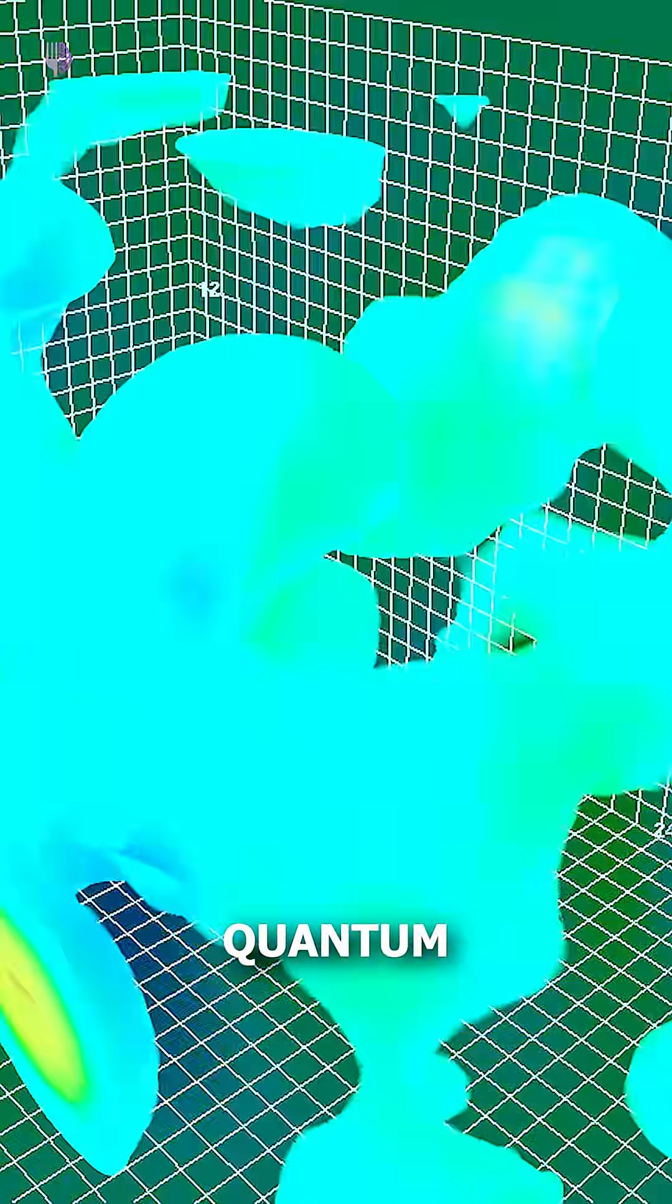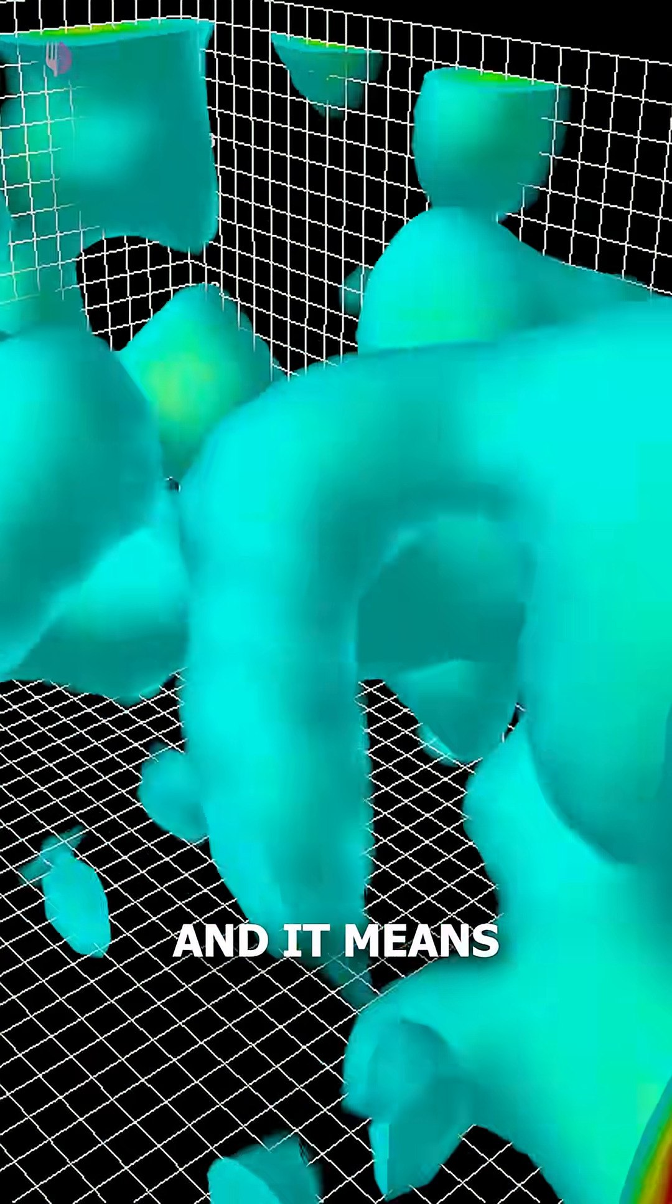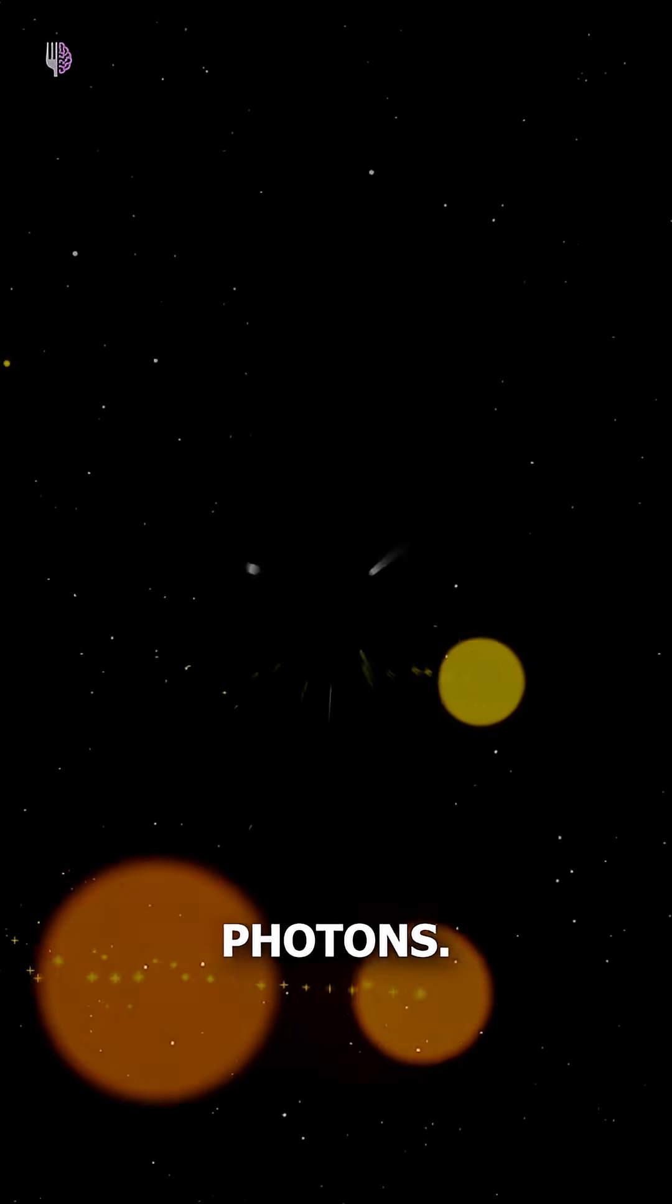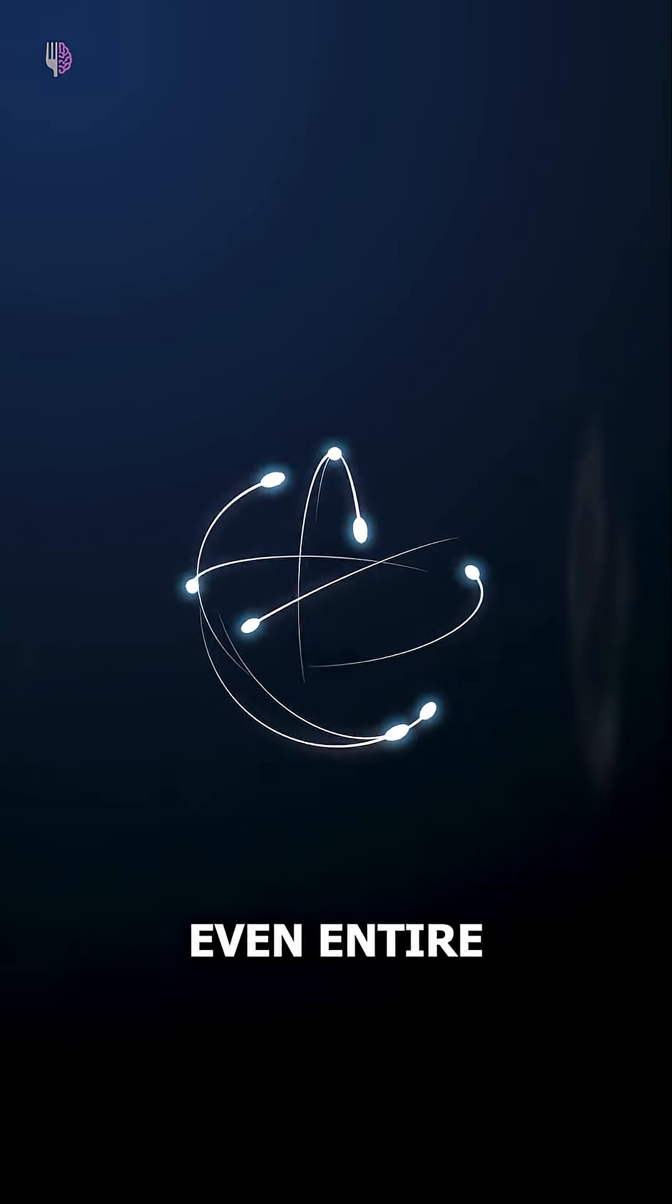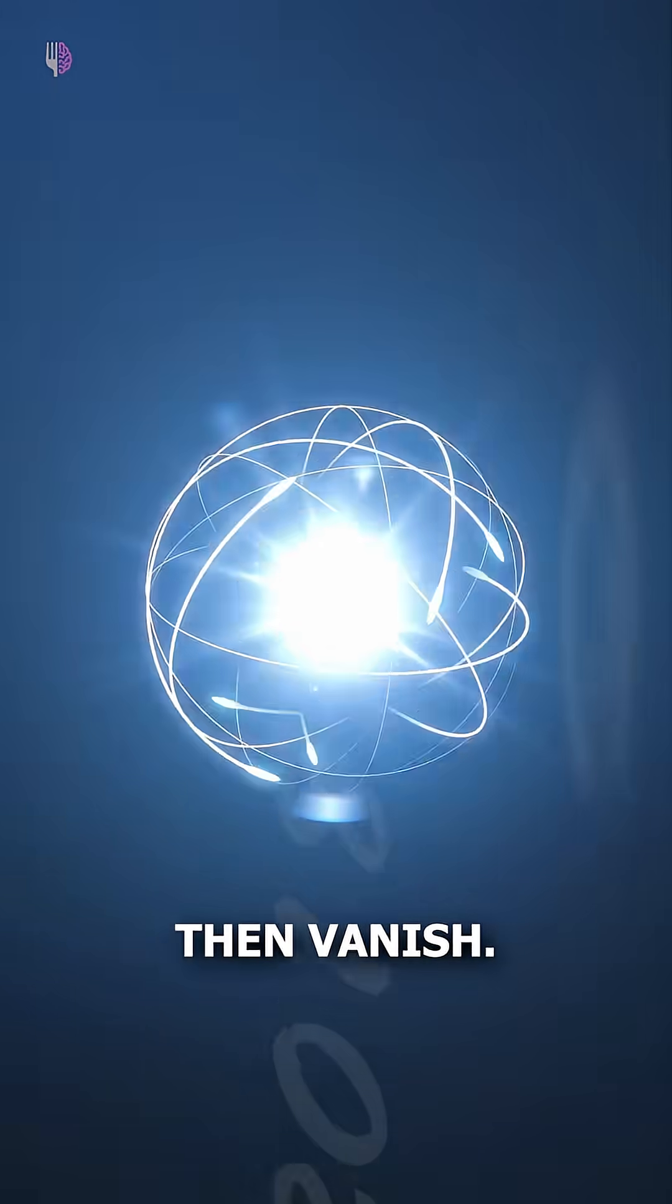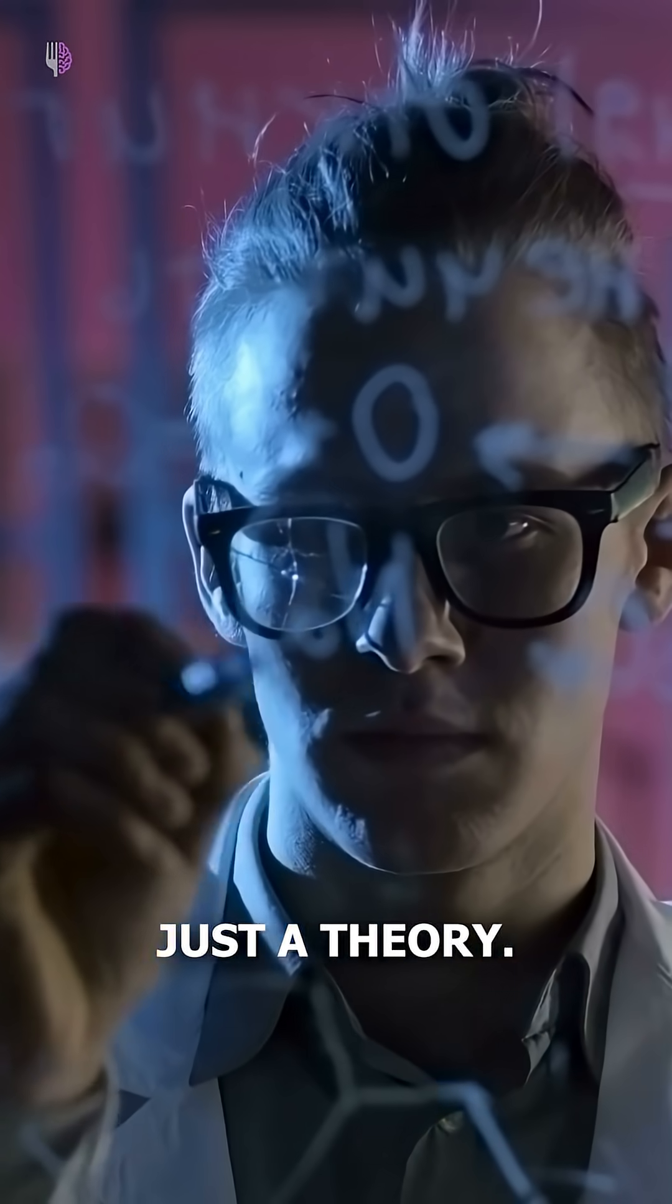This is called quantum fluctuation, and it means empty space is actually full of potential. Photons, electrons, even entire particle pairs can appear for a fraction of a second, then vanish. This isn't just theory, it's been measured.